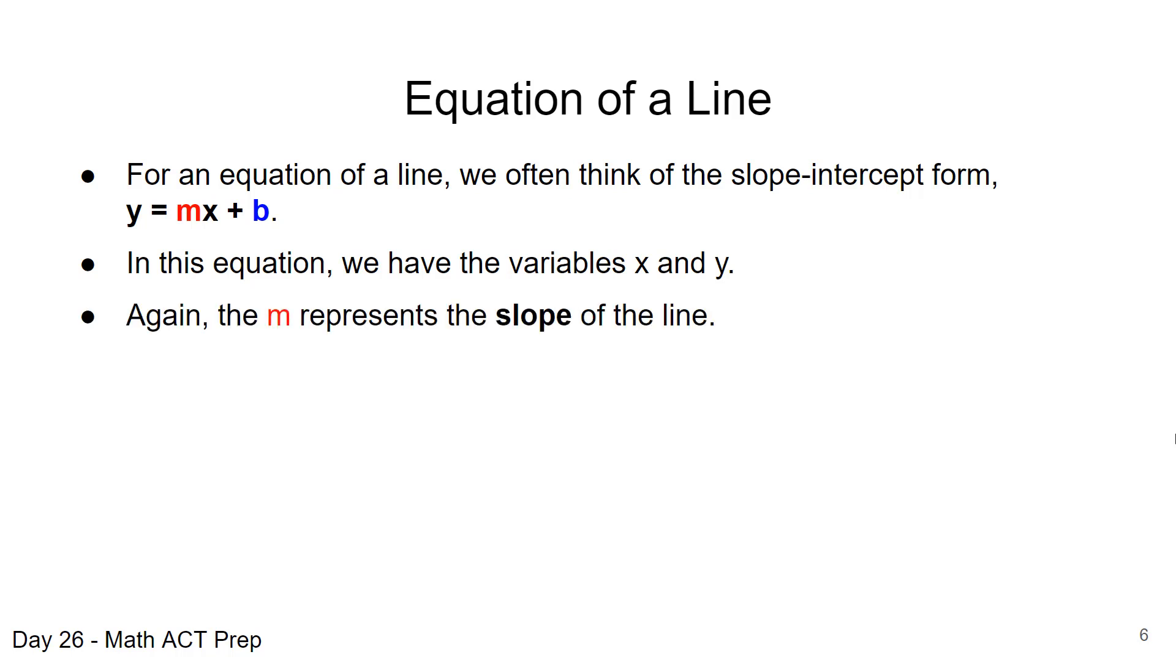That's usually what we plot on our coordinate plane. We're talking about x and y. And again here, m is going to represent the slope of the line. That is on the x term. b is what we refer to as our y-intercept, and that is where the line crosses the y-axis when x is equal to zero.